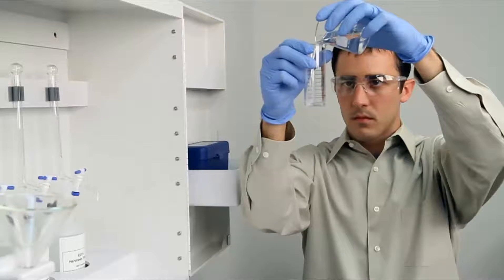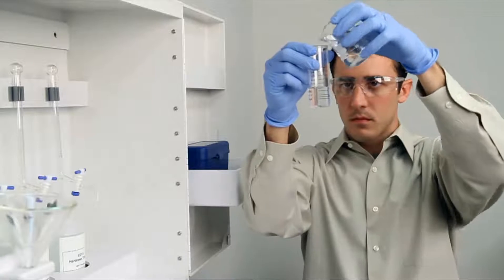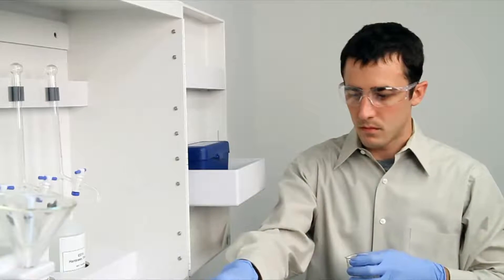To get an accurate sample size, you want to hold the vial close to eye level. Once you feel you have an accurate sample, place the vial on a level surface and bend down to eye level.